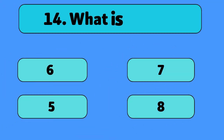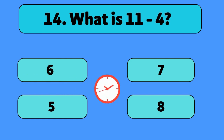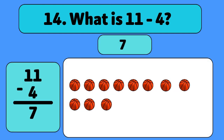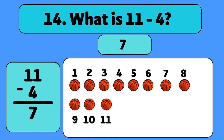What is 11 minus four? The answer is seven. We start with 11 basketballs and take away four. Let's count. One, two, three, four. We have seven basketballs left.